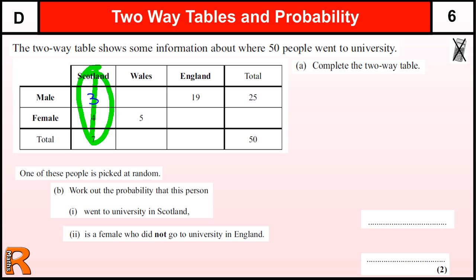Now that leads us to allow us to calculate this one — the males row here. Now we've got that three, we know that three plus three in Scotland, plus those in Wales, plus 19 in England makes 25. So three and 19 is 22, that leaves us three in Wales.